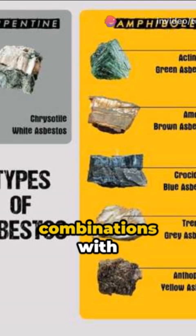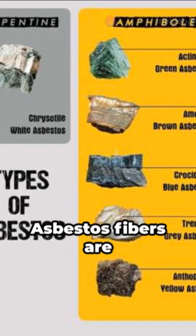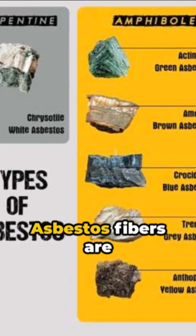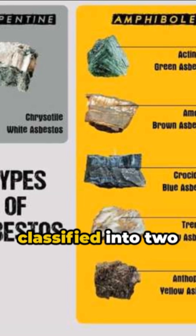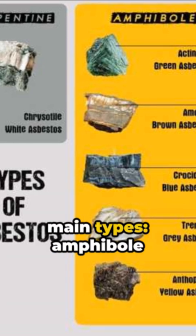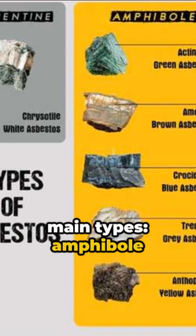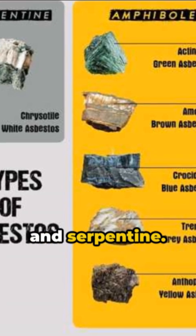Asbestos fibers are extracted from silicate-rich rocks, mainly magnesium silicates or combinations with other elements. Asbestos fibers are classified into two main types: amphibole and serpentine.